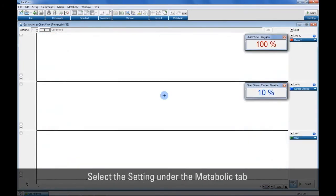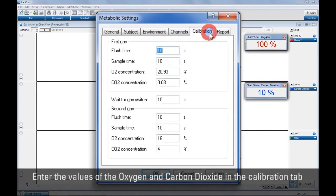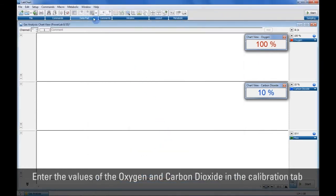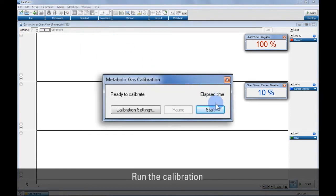Alternatively, you can calibrate the gas analyzer using the LabChart metabolic module. Select the setting under the Metabolic tab. Then go to the Calibration tab and enter the values of the oxygen and carbon dioxide for the known gas you will use and click the OK button. After that, go back to the Metabolic tab and select Run Calibration.